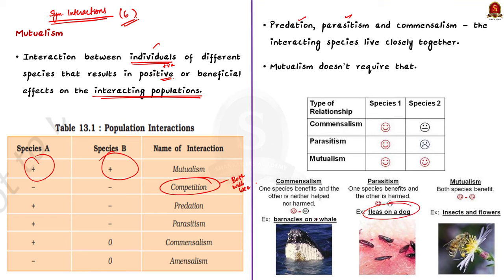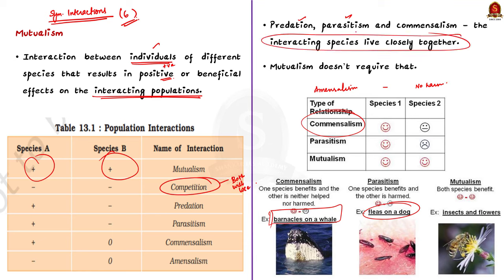The interaction where one species is benefited and the other is neither benefited nor harmed is called commensalism. For example, hermit crabs use gastropod shells to protect their bodies. In amensalism, on the other hand, one species is harmed whereas the other is unaffected. Importantly, predation, parasitism, and commensalism share a common characteristic — the interacting species live closely together, whereas mutualism does not require that.